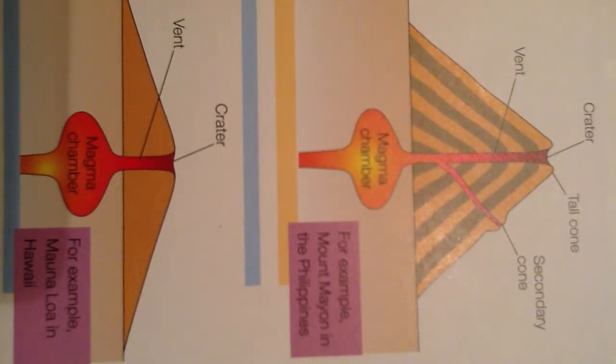Then there is the shield volcano. This is formed at a constructive plate margin. As the two plates move apart magma rises up from the mantle. Some of the magma is forced to the surface through a vent forming a volcano.